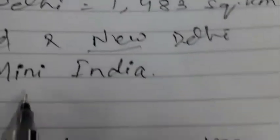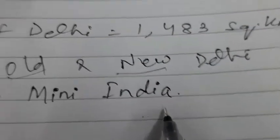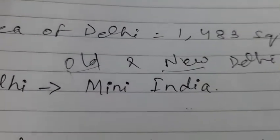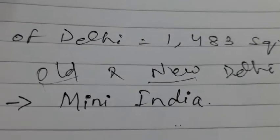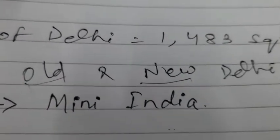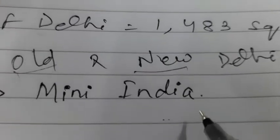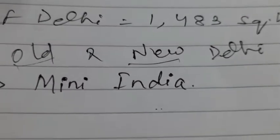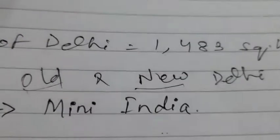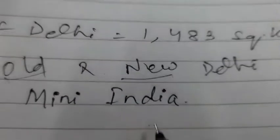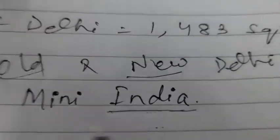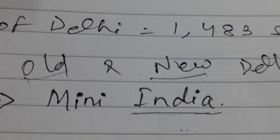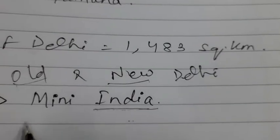Delhi is also called Mini India. It is called Mini India because, as it is the capital of India, all the ministers are living there, all the main offices are there, and many companies are there. So people from all over the states of India live in Delhi, and that is why it is known as Mini India.